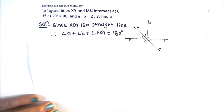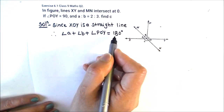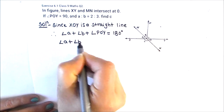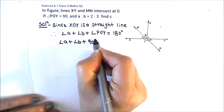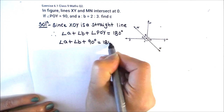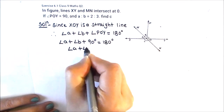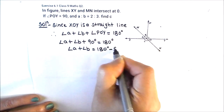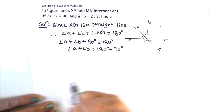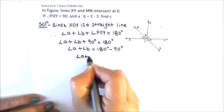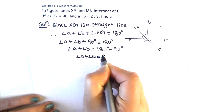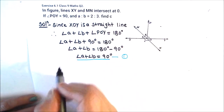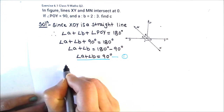We have been given angle POY as 90 degrees, so we put that value in: angle A plus B plus 90 degrees equals 180 degrees. Transposing 90 degrees to the right-hand side, angle A plus angle B equals 90 degrees. This is our equation one.